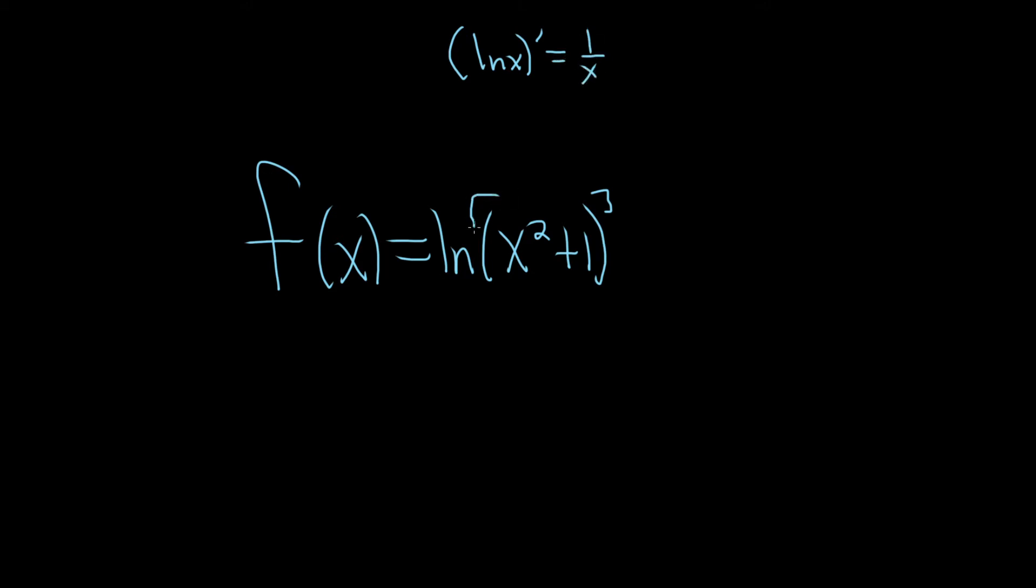So here it's the ln of all of this stuff. So using the chain rule, it would be 1 over all of this stuff, times the derivative of this stuff.